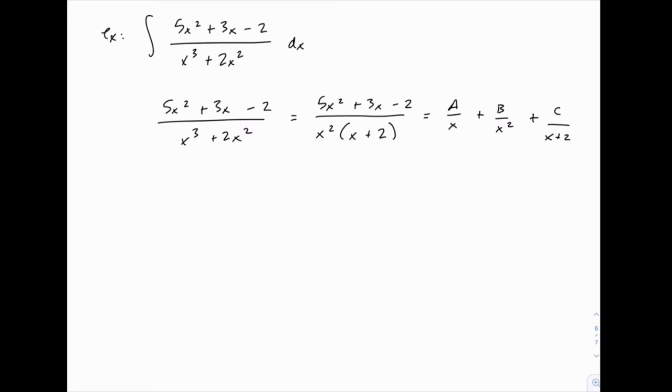The last step is to solve for A, B, and C, which we start by multiplying both sides by this denominator. On the left side, we'll just be left with the numerator 5x² + 3x - 2.